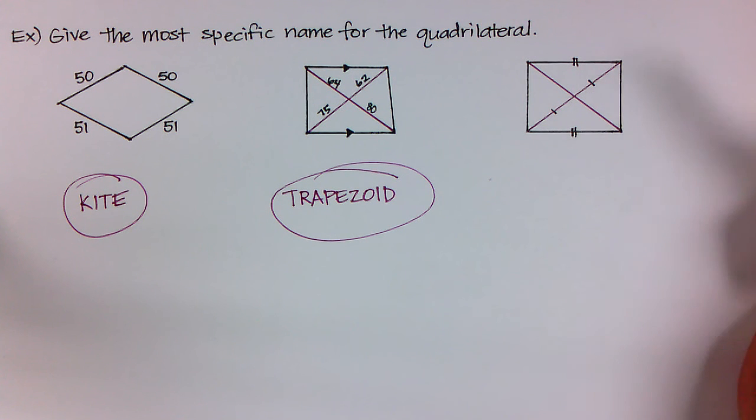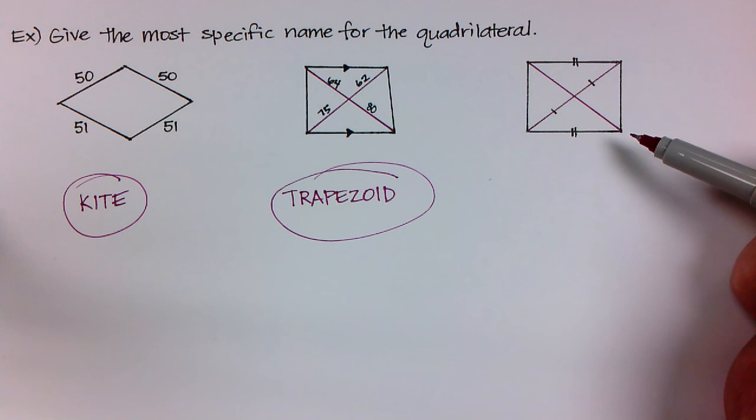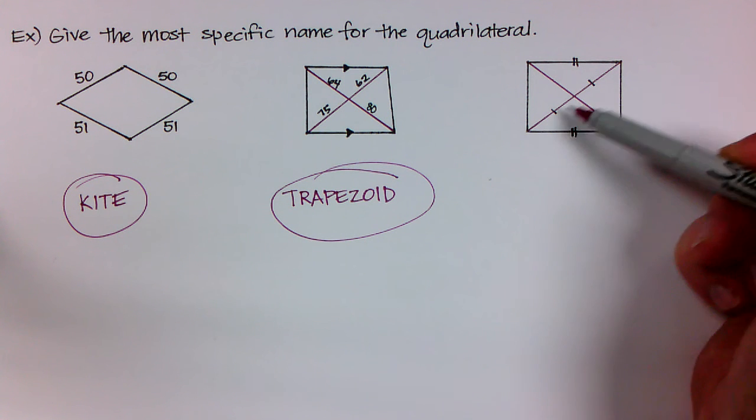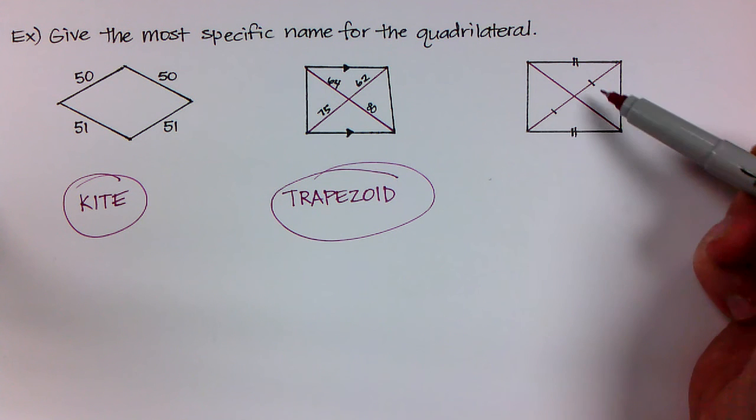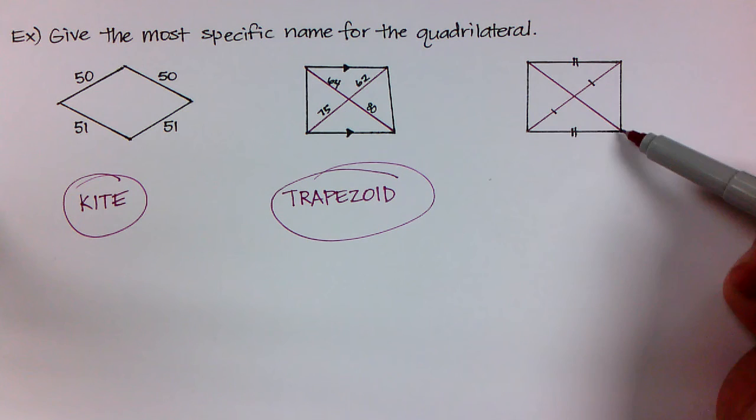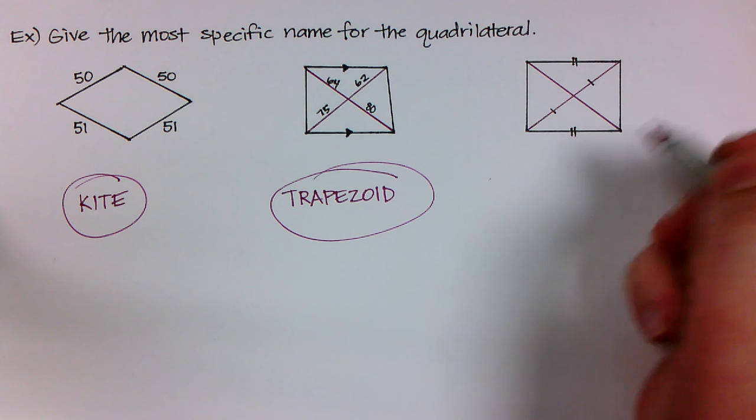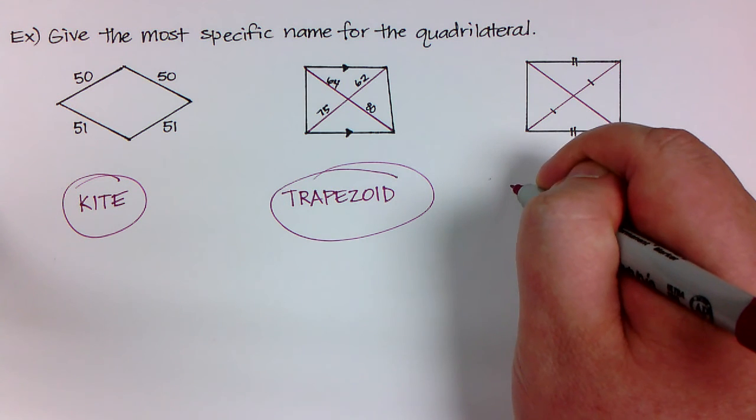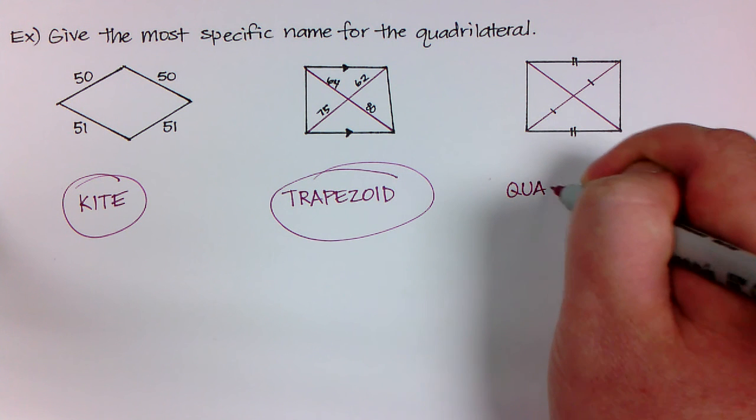This last one, it looks like it has a lot of specifics. I'm told that the top and the bottom segments are congruent. I also have two diagonal lines drawn. And for one of the diagonal lines, it's showing that the segment has been bisected. But I'm not told about anything else regarding this other diagonal or the sides or any angles. So I really don't have any specifics.